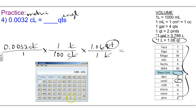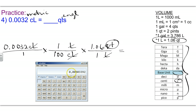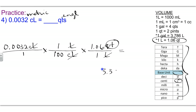Calculating: 0.0032 divided by 100 times 1.06 gives us a very small number. Moving the decimal 1, 2, 3, 4, 5 places gives 3.392×10⁻⁵ quarts, which rounds off to 3.4×10⁻⁵ quarts.